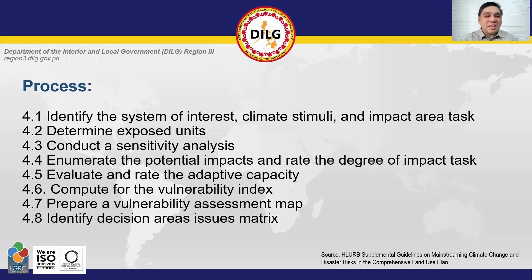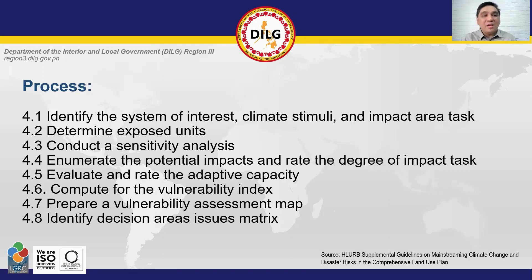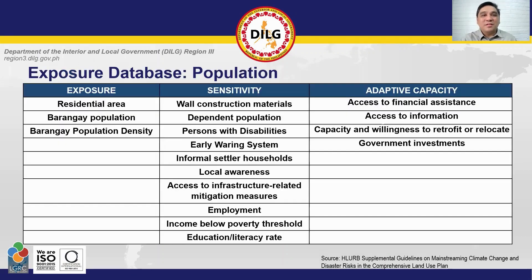Before we go to CCVA, let me first discuss the second and third components of our exposure database that you need to prepare in order to properly accomplish this step. I am referring to the sensitivity and adaptive capacity attributes. The exposure database comprises exposure, sensitivity, and adaptive capacity information. The table shows the data and information needed for the population exposure database.